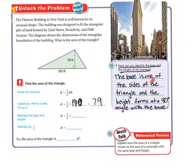So the base is one of the sides of the triangle, and the height forms at a 90 degree angle with the base. So here's my base, and then there's the 90 degree angle, and then there's my height that forms at the 90 degree angle.